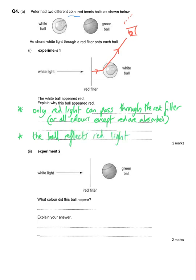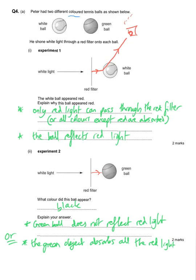In a second experiment, white light is shone through a red filter again, but this time it hits a green object. Green objects only reflect green light. Since only red light is hitting it, no light is reflected from the green ball, so it appears black. The explanation is that the green ball does not reflect red light, does not reflect the light that has passed through the filter, or that the green object absorbs all the red light.